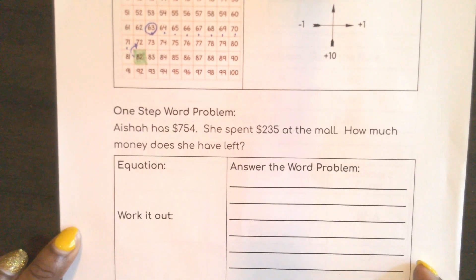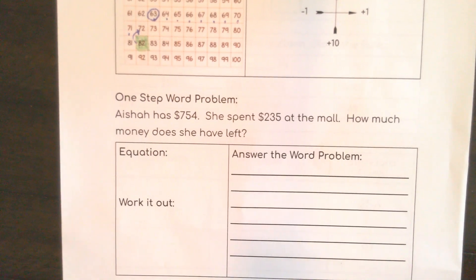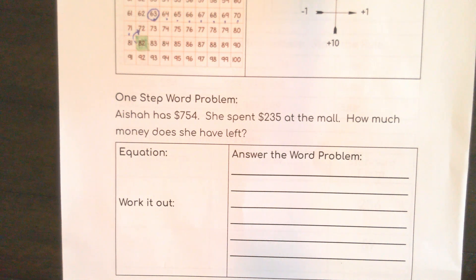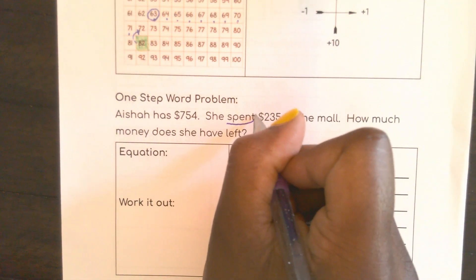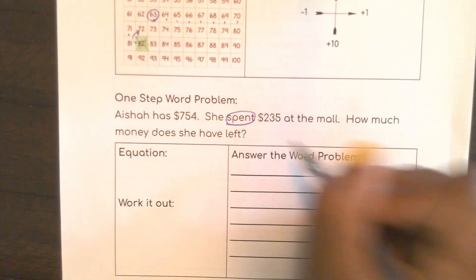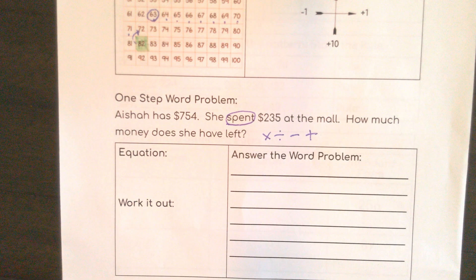Now we are going to do some solving with Aisha. Aisha has $754 — she spent $235 at the mall. How much money does she have left? So this word 'spent' is very important because it's going to tell me what I need to do and what equation I will have.